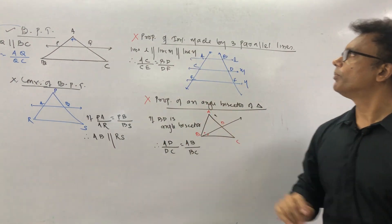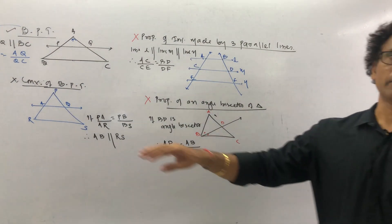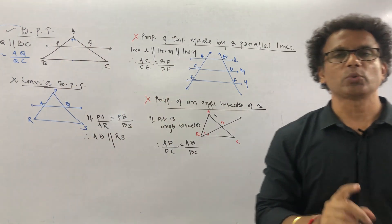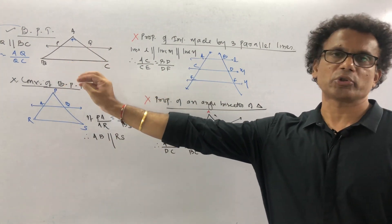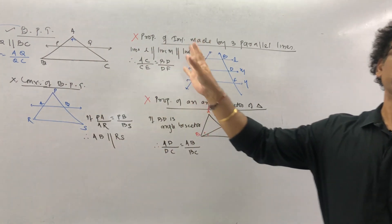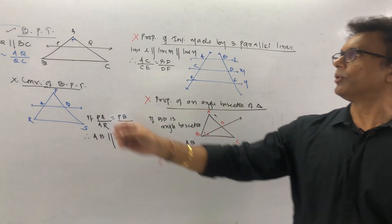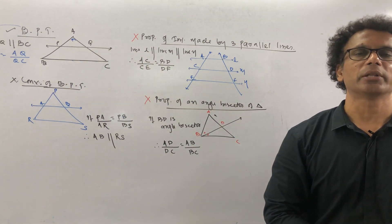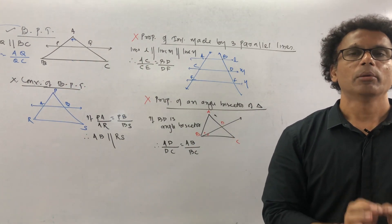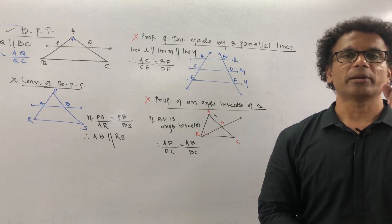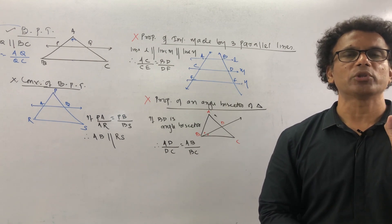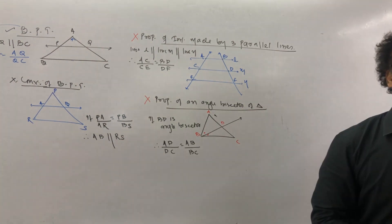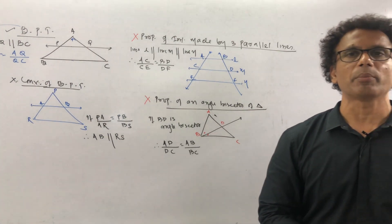In exercise 1.2, only the basic proportionality theorem and the converse of basic proportionality theorem are included — the other two properties are not in it, but I have told you extra. Now we will go with your first theorem in SSE, that is the basic proportionality theorem. Statement carries 1 mark; if they ask you to prove it, that is 3 marks.